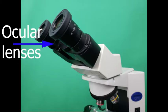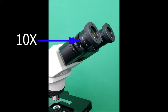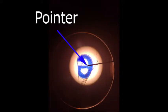The ocular lenses are two removable lenses that you look through to observe the specimen on the slide. Some microscopes have a single ocular lens. The most common magnification of the ocular lens is 10x, increasing the size of the specimen by a factor of 10. One of the ocular lenses may have a pointer, which is a dark line that enables the user to point to a part of the specimen on the slide.